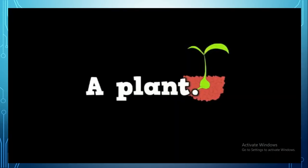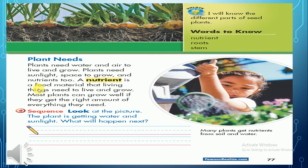Now we know the five needs of plants, and we also have nutrients — so those are six needs of plants. If we look at the book page 77, you're going to find plants' needs again. Plants need water and air to live and grow. Plants need sunlight and space to grow, and also nutrients. Nutrients are food materials that living things need to live and grow.